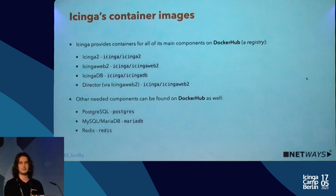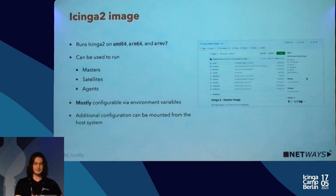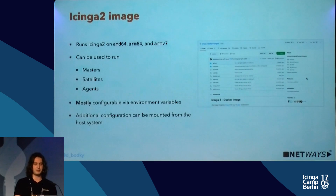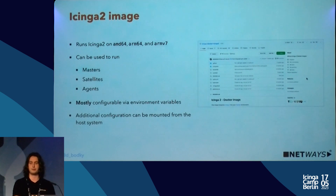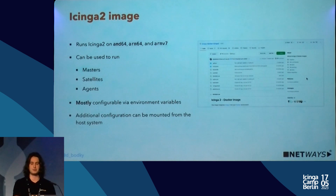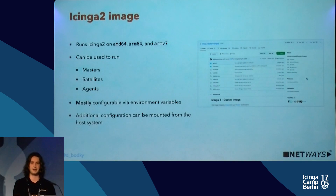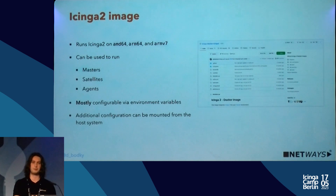Instead of installing Icinga 2 on every agent, if they have Docker running you can spin it up in a container. It's mostly configurable via environment variables — you can pass certificate authorities, tell it to ignore local configuration, things you'd normally pass to the node setup wizard. Additional configuration can always be mounted from the host system, so you can pass custom configuration snippets should the need arise.